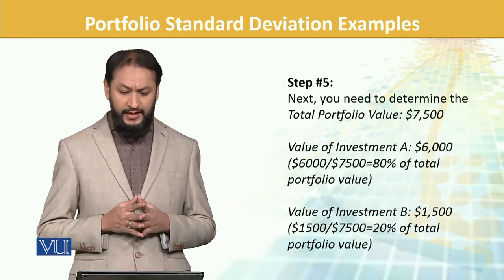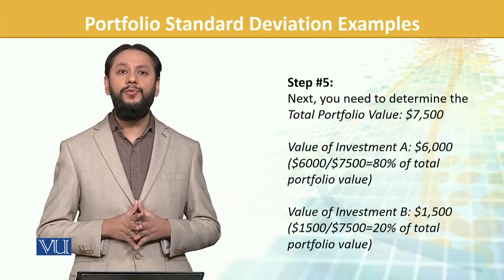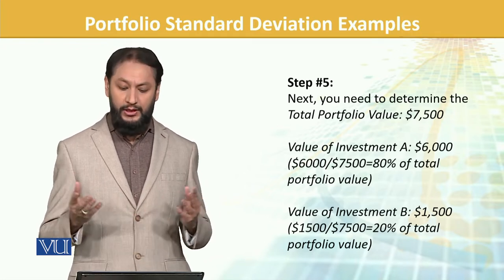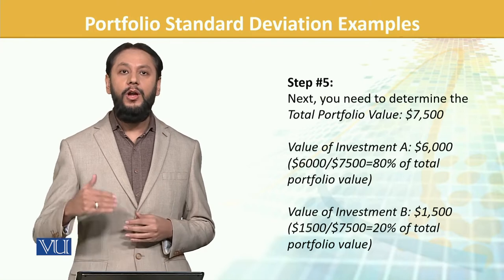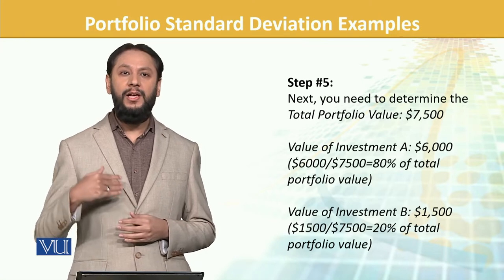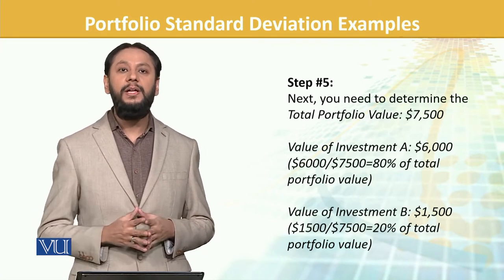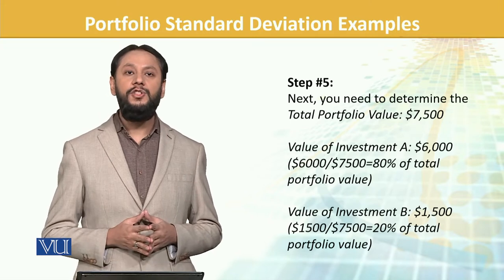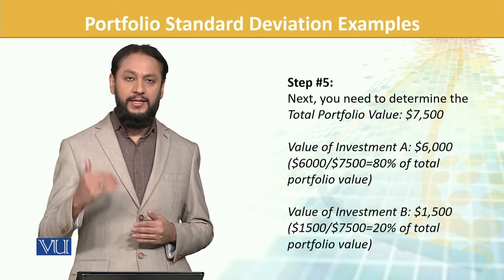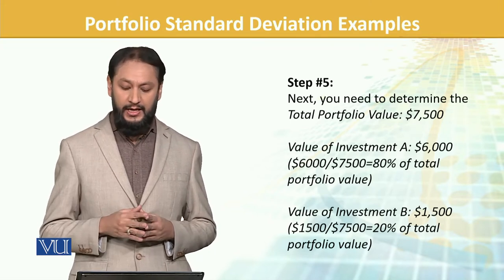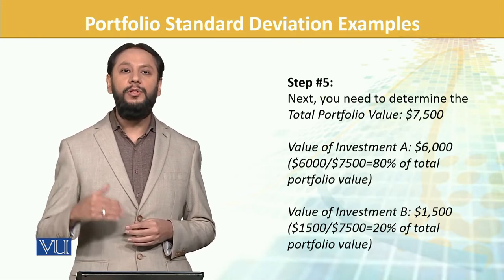The next step is to determine the total portfolio value — how much is our portfolio worth. Let's say that is 7,500. Then you need to see how much you have spent in each part. For example, we have spent 6,000 in A and 1,500 in B.